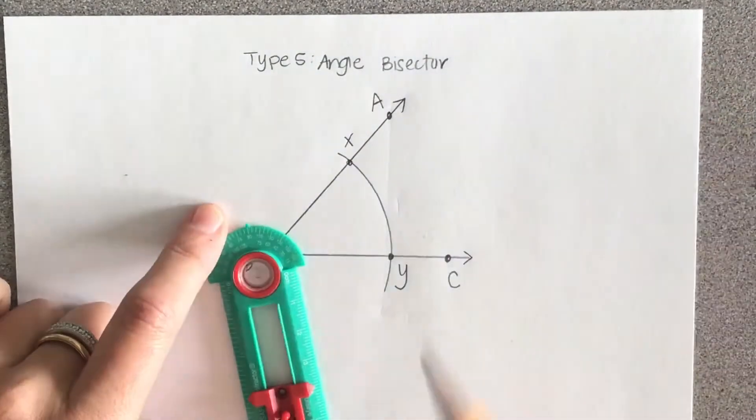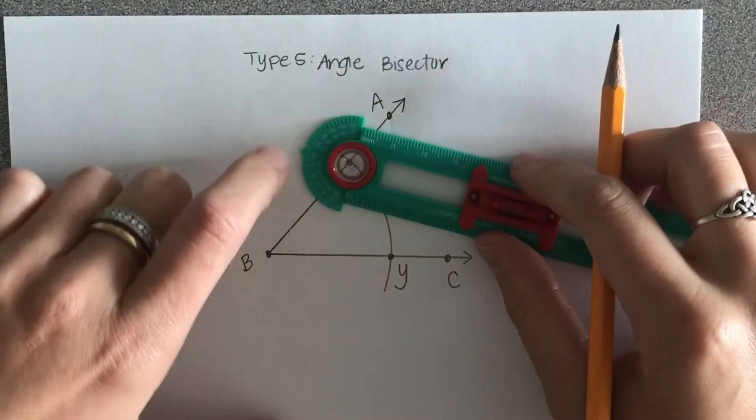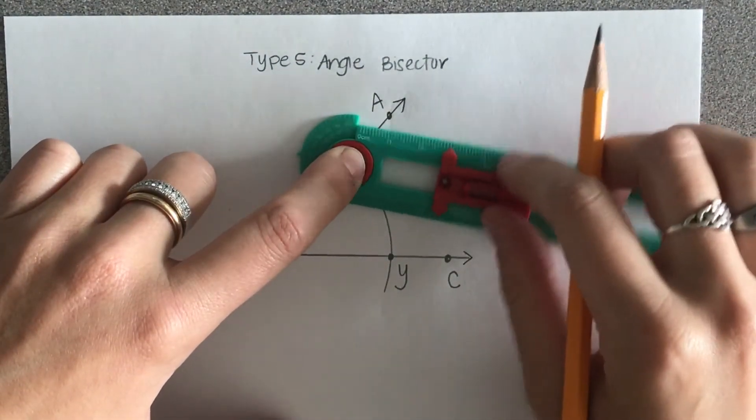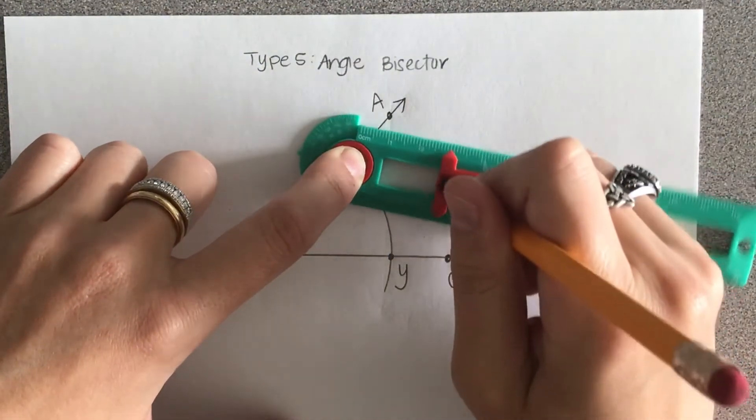Somewhere over here on the interior. So I put it on point X, pick some point over here on the inside, and make a little arc.